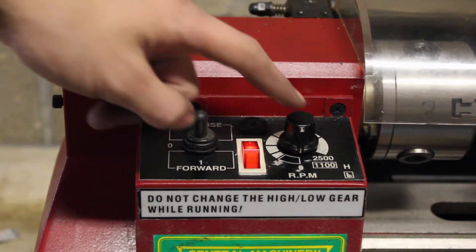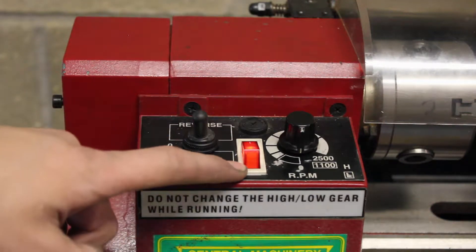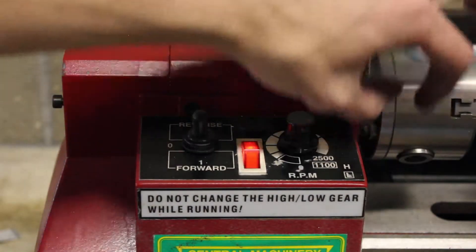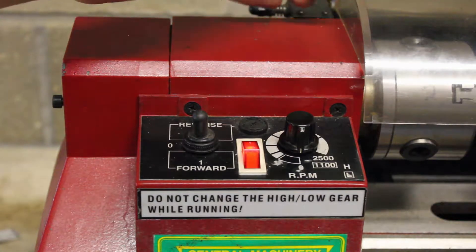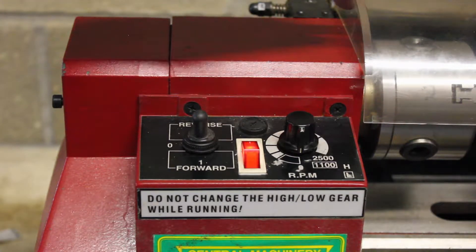You can't use either of these without having the power on first. Also in order to make the chuck spin here, you have to make sure that the guard is down. It's got a trigger to make sure that you have that guard down before you spin it.